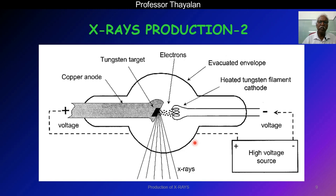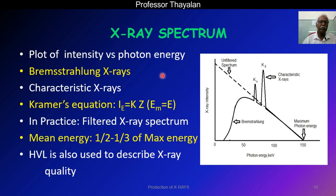X-ray production therefore needs a very good cooling arrangement. Let us see the X-ray spectrum. The X-ray spectrum is a plot drawn between X-ray intensity and photon energy. The spectrum consists of two types of X-rays: Bremsstrahlung X-rays and characteristic X-rays. The Bremsstrahlung X-rays follow the broad continuous graph, and the characteristic X-rays show selective peaks.